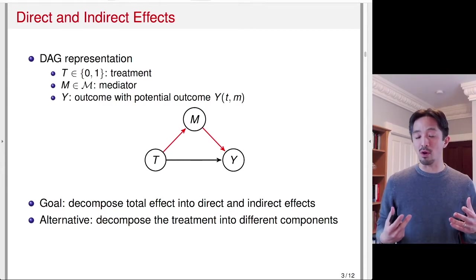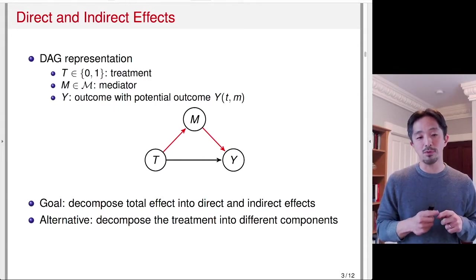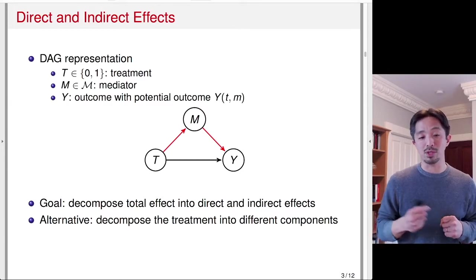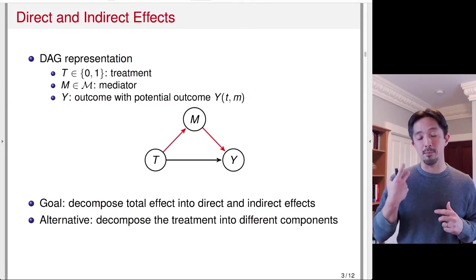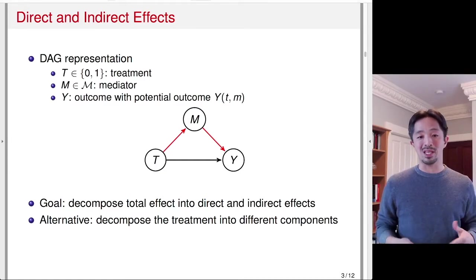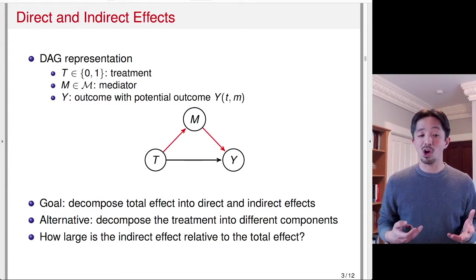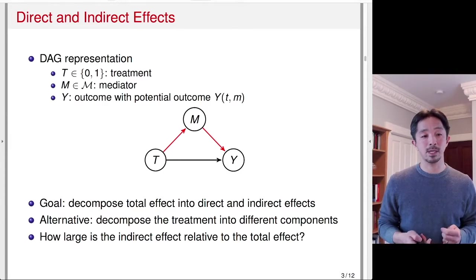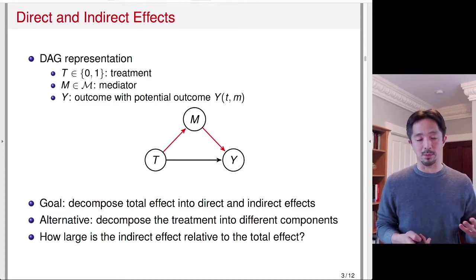That's an alternative way of thinking about causal mechanisms. Here we are more interested in not decomposing the treatment itself, but looking at the factors that are on the causal path from the treatment to the outcome — what is the mediator, this post-treatment variable that is playing a major role in the treatment effect? So how large is the indirect effect relative to the total effect or the direct effect, which represents all other mechanisms? That's the way to think about causal mechanisms we're going to focus on in this module.